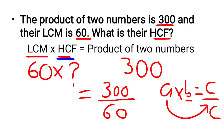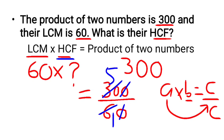300 divided by 60: 6 goes into 360, so 300 divided by 60 equals 5. So the LCM is 60 and the HCF is 5. The answer is 5.